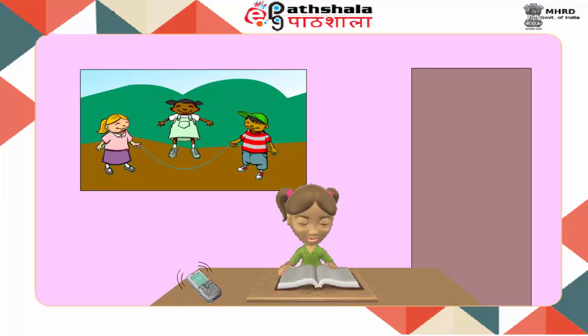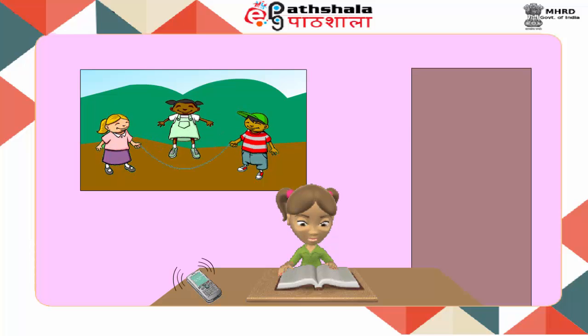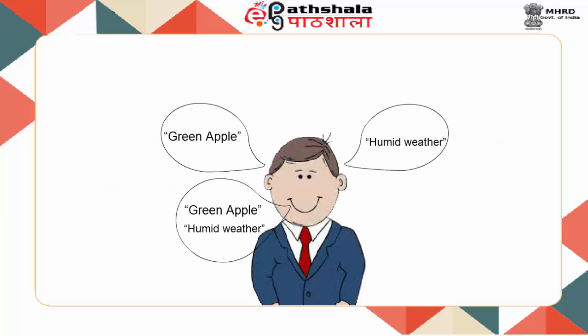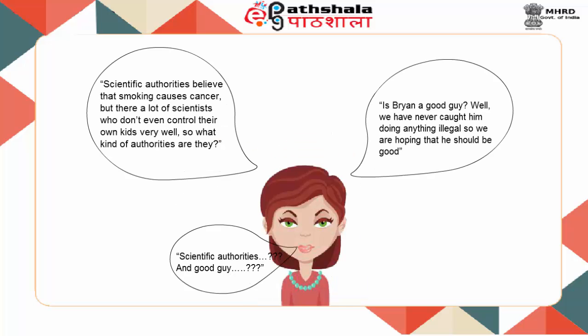Does that mean that people can never pay attention to two messages at once? Broadbent thought that it is possible to pay attention to two messages at once, but believed that what is limited is the amount of information we can process at once. For instance, a person can attend simultaneously to more than one message if it contains little information. On the other hand, a great deal of information when presented quickly would take up more mental capacity and hence not much of the information would be attended to at once.